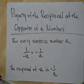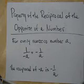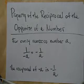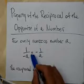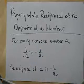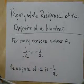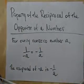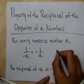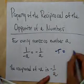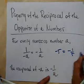Property of the reciprocal of the opposite of a number. For every non-zero number a, 1 over negative a is the same thing as negative 1 over a. So the reciprocal of negative a is negative 1 over a. What's the reciprocal of negative 5? It's negative 1 over 5.